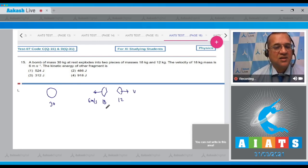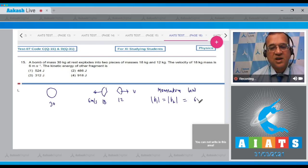You can take that by momentum conservation law, the momentum of this piece will be equal to the momentum of other one because total momentum change is zero. So what is the momentum of this one? That is equal to 6 into 18 kg meter per second, and both will have the same momentum.